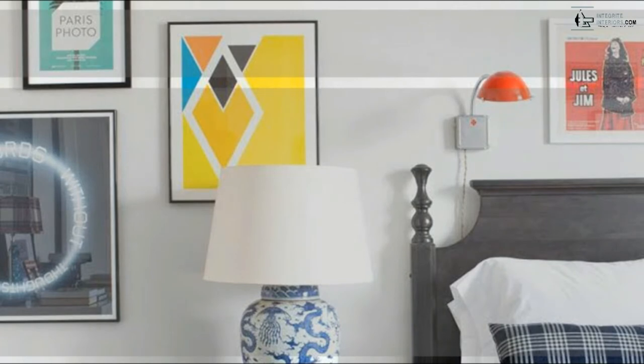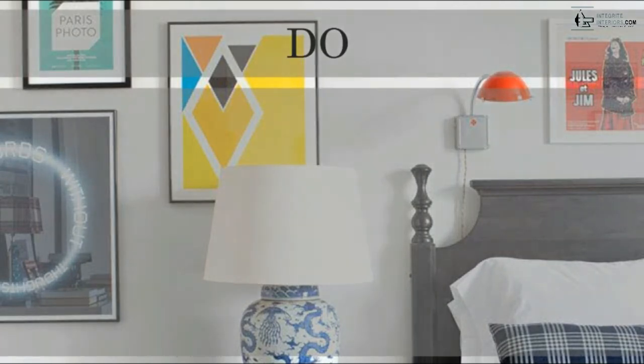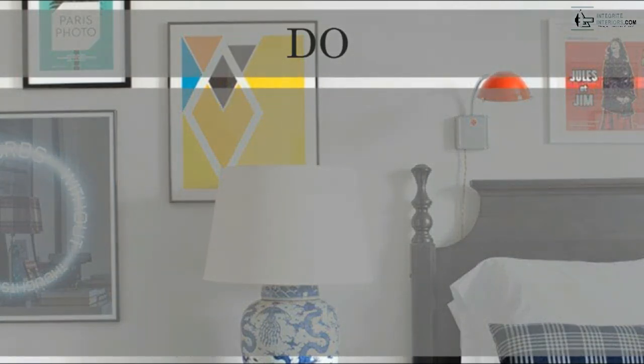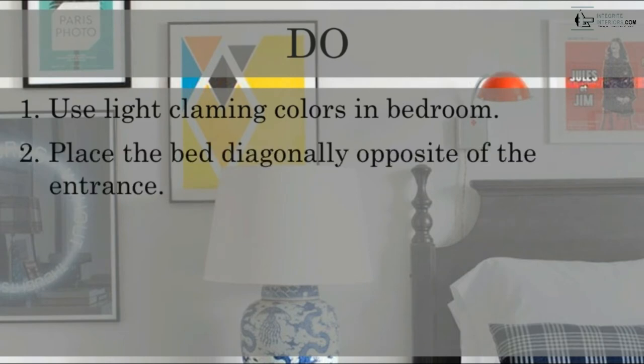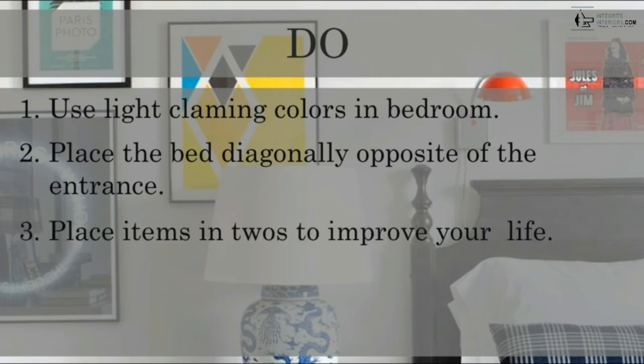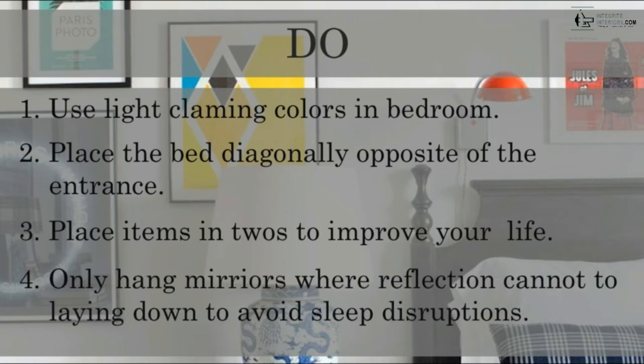Do these things for placement of a bed. Let's start with the first point: use light calming colors in a bedroom. Second point, place the bed diagonally opposite of the entrance. Third point, place items that improve your life. And fourth point, only hang a mirror where reflection cannot lay down to avoid sleep disruption.